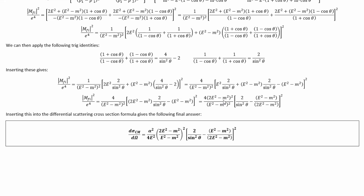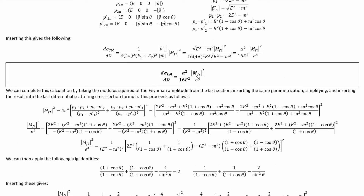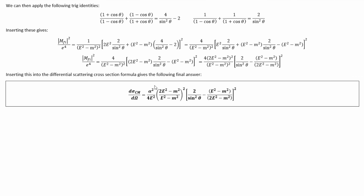We can then plug this into the differential scattering cross-section formula, and ultimately we get this final answer — which is the standard result for Møller scattering in scalar quantum electrodynamics. It is a pretty little result. So now you know how to derive the tree-level differential scattering cross-section for Møller scattering. It's surprisingly easy for a quantum field theory calculation, and the result is no less beautiful — kind of an easy prize. I hope you enjoyed this video and found it educational. If you did, please give it a thumbs up and consider subscribing.